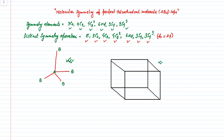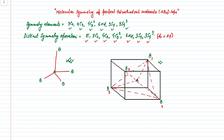How do we represent a tetrahedral molecule in a cube? First of all, the central atom A is placed at the center of the cube. Then we put the B atoms at the alternate corners of the cube — here is B, this is the B atom, this is the B atom, and this is the B atom. For our understanding, we mark these B atoms as B1, B2, B3, and B4. When we join all the B atoms with the central atom A, the visible structure is nothing other than your tetrahedral structure. After joining all the B atoms with A, we find that one tetrahedral structure is visible.